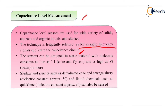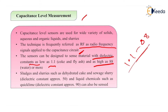The sensors can be designed to sense material with a dielectric constant as low as 1.1 and as high as 88, that is for water. So the dielectric material must have a range between 1.8 to 88 — 1.1 is for coke or fly ash and 88 is for water.